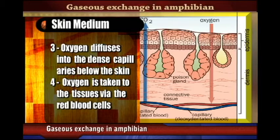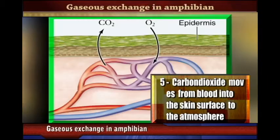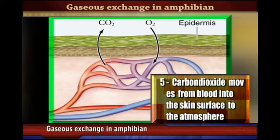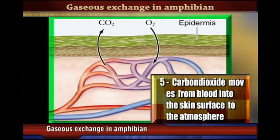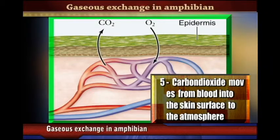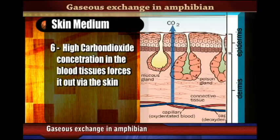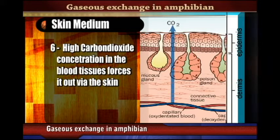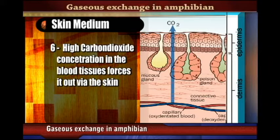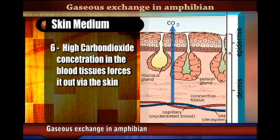Oxygen is taken to the tissues via the red blood cells. Carbon dioxide moves from the blood into the skin surface and out to the atmosphere — the high concentration of carbon dioxide in blood tissue forces it to move out via the skin surface. That is gaseous exchange via the skin.